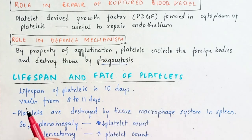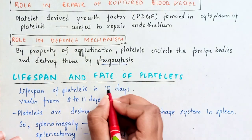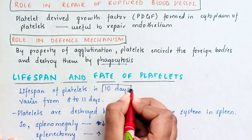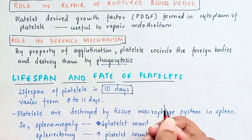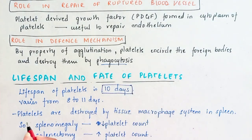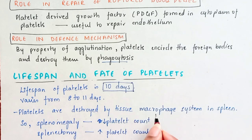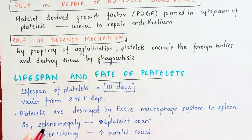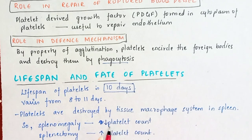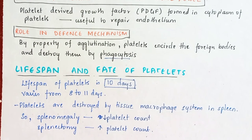The lifespan of platelets is 10 days, varying from 8 to 11 days. Platelets are destroyed by the tissue macrophage system in the spleen. Remember: whenever there is splenomegaly, platelet count decreases, and whenever there is splenectomy, there is an increase in platelet count.